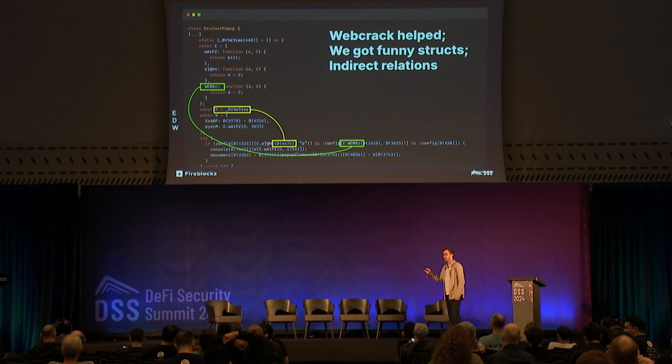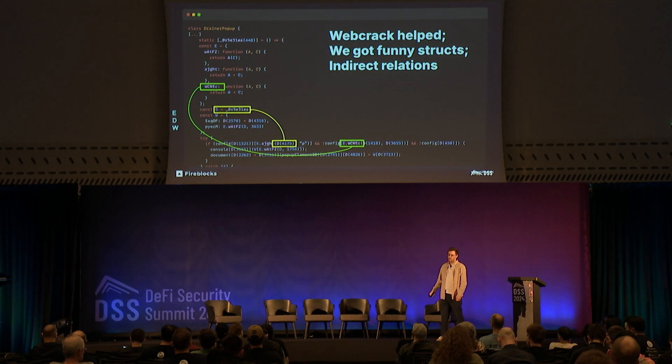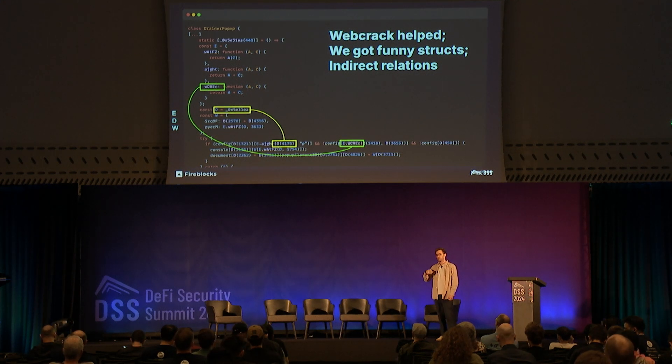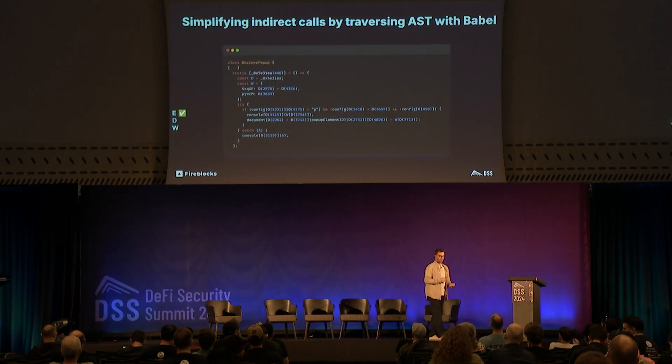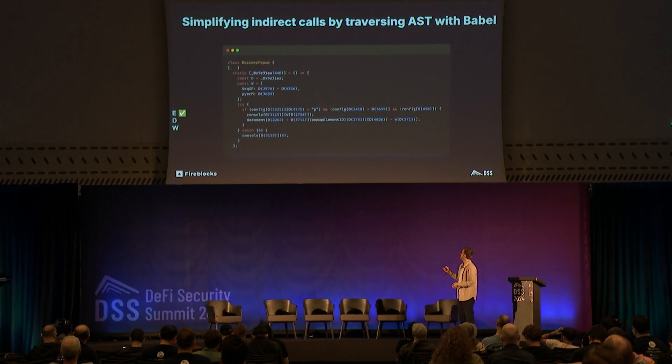Specifically, we identified three layers to tackle one by one — call them E, D, and W. In the green box, you can see where E is being called and defined on top, with D also making some kind of indirect call to another function. The first thing we did to remove and simplify E was to use Babel to transform the code into an AST — an abstract syntax tree — which essentially parses JavaScript in a logical way. You can think of it as a smart find-and-replace: whenever we see a mention, we replace it with the direct code or direct string, making the code way easier to understand.